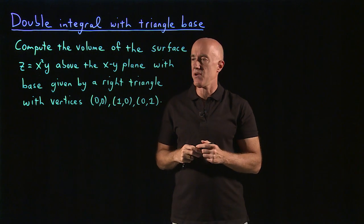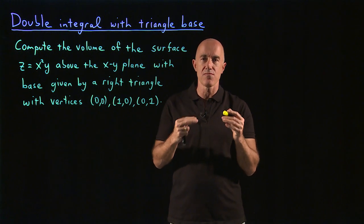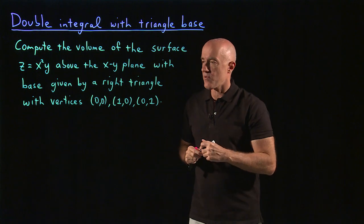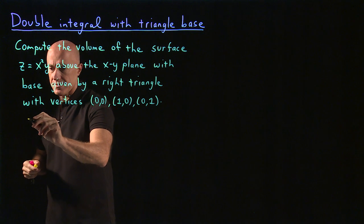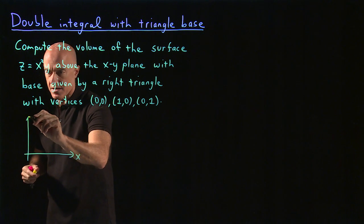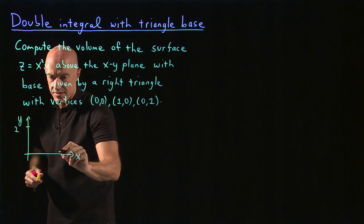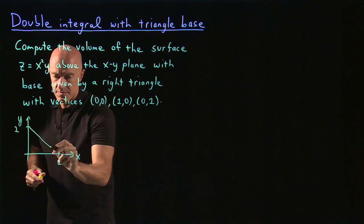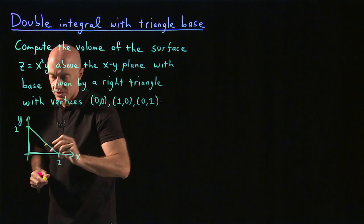So the difference here is that the base is the right triangle. But that makes the integral somewhat more complicated. And let me show you how that works out. So we should draw the base. So here's x and y and 1 and 1. So the rectangle, I mean not the rectangle, the triangle looks like this.